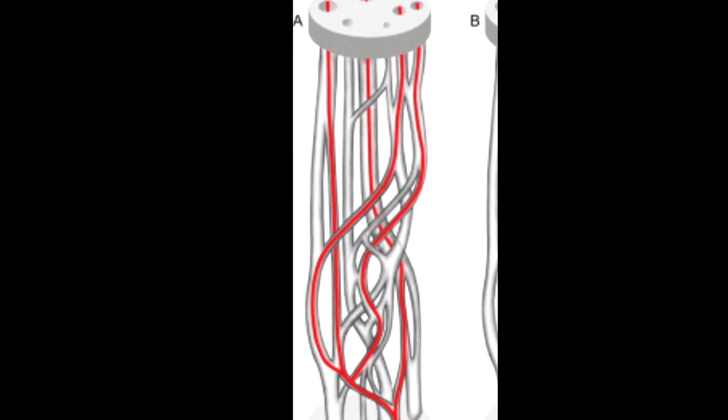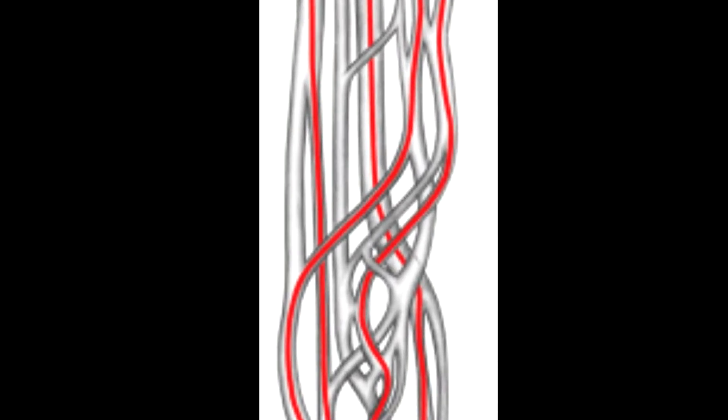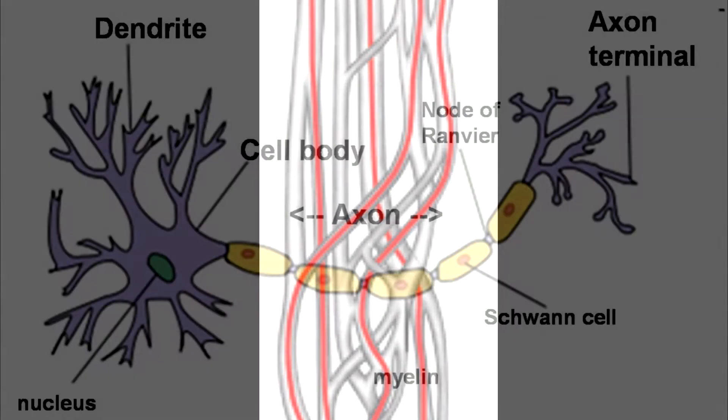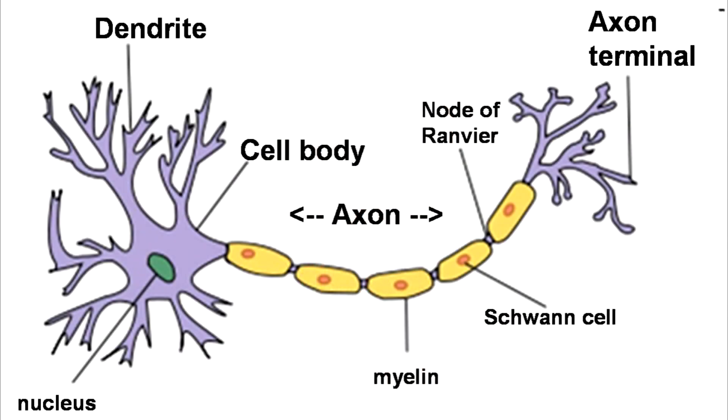When multiple cuffs are eventually used in the same nerve, this particular feature of nerve bundles will come in handy because it provides a way to target different axons at different points in the nerve.